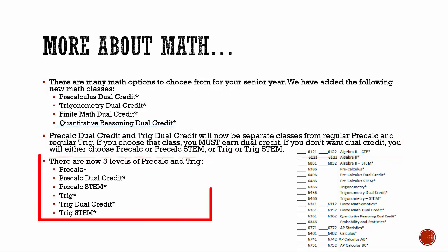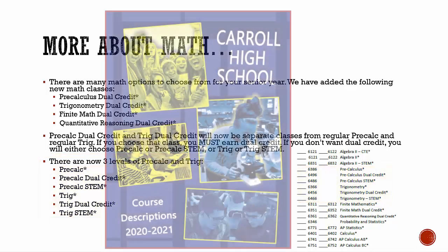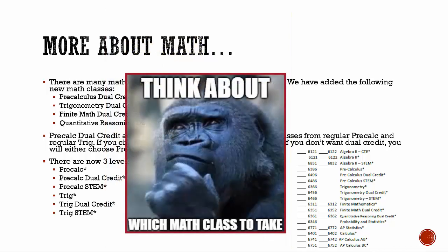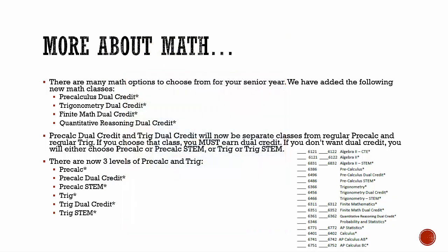So there are now three levels for pre-calc and trig: regular pre-calc, pre-calc dual credit or pre-calc STEM; and regular trig, trig dual credit and trig STEM. STEM is designed for students who plan to major in a math-intensive area in college, so you should be taking the STEM version, not dual credit. Check your course description guide for descriptions and additional information on all math options. Talk to your current math teacher and counselor when deciding to help choose the math course that's most appropriate for you.